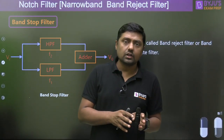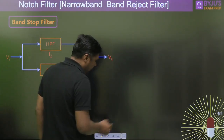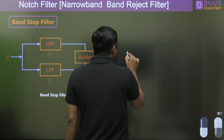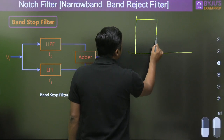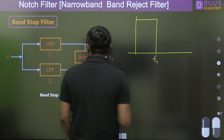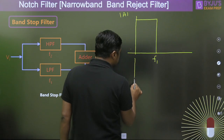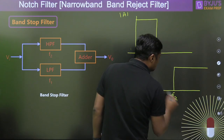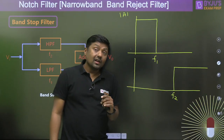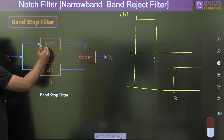The notch filter is a special case of band stop filter. For the band stop filter, consider the frequency response: the low pass filter has a cutoff frequency F1 and passes signals below F1. The high pass filter has a cutoff frequency F2 and passes signals above F2. So the low pass filter passes signal below F1 and the high pass filter passes signal above F2.